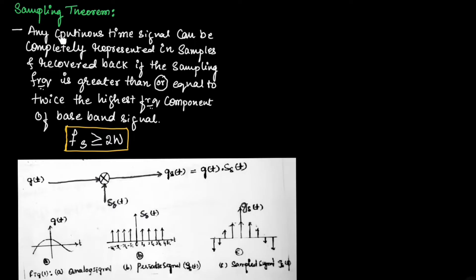We can perform sampling on a continuous time signal if the sampling frequency is greater than or equal to twice that of the highest frequency component of the baseband signal. If the baseband signal has only one frequency instead of multiple frequencies, we can write Fs should be greater than or equal to 2Fm, where Fm is the frequency of the baseband signal or modulating signal. If there are multiple frequencies, we choose the highest frequency component present in the baseband signal.